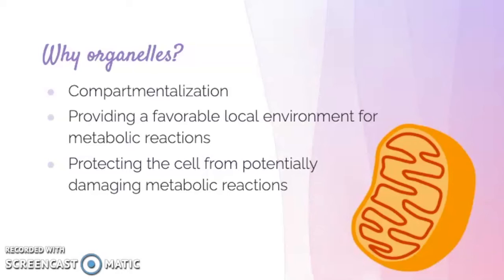We minimize competing interactions and we increase surface area where reactions can occur — for example, along the cristae, the folds of the mitochondria. Compartmentalization can also protect different parts of the cell from potentially damaging metabolic reactions when the pH or byproducts of a reaction end up being dangerous for the rest of the cell.